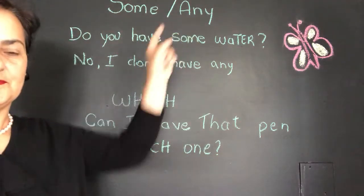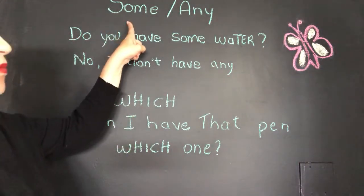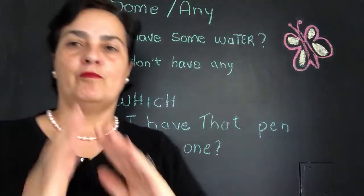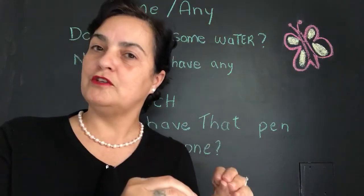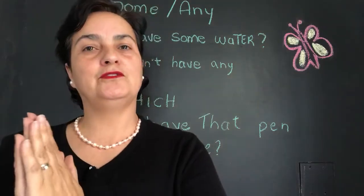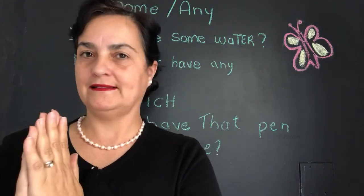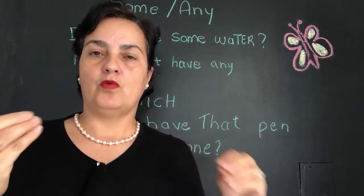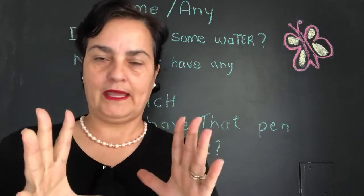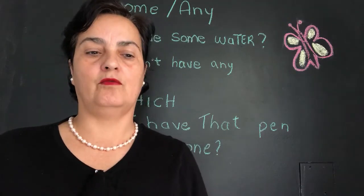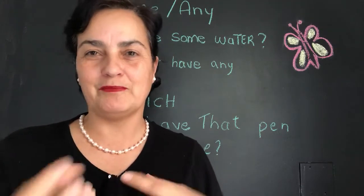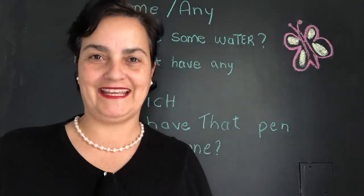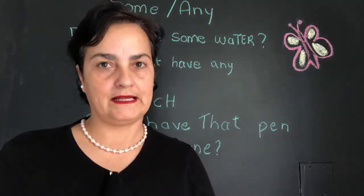Some, any. O que significam essas palavras? Algum ou alguma, nenhum e nenhuma. Uma está no positivo — alguma, algum — e a outra está falando do negativo — nenhuma, nenhum, certo? Essas duas palavras podem ser usadas para coisas contáveis ou não contáveis. Por exemplo, se você falar 'water' — água não é contável. Você pode usar para coisas abstratas ou não abstratas, ok?